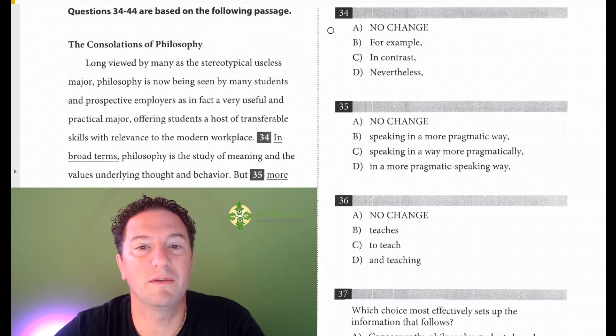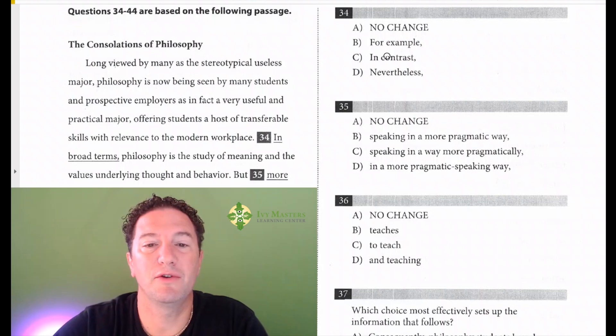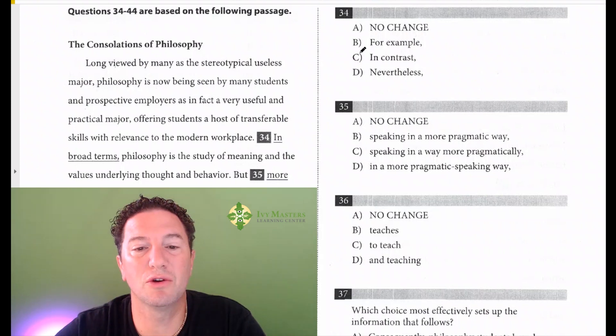So I think that this is the best way to approach this type of question. Don't read the underlined portion if you see answer choices like this, transitions and conjunctions. And then what you want to do is you want to determine whether the sentence before the sentence itself show similarity or difference. In this case, there's nothing that shows difference. So you can eliminate the answer choices that show difference. So in contrast and nevertheless are gone. And what exactly do we have here?